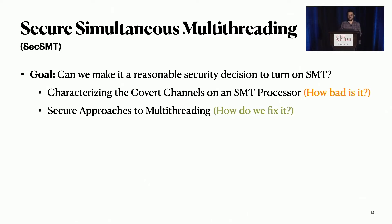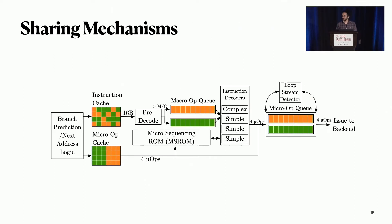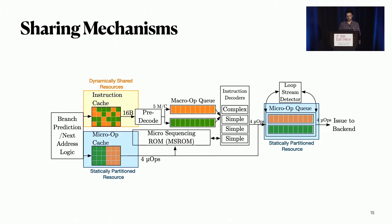The goal of this research is to design an SMT processor that is as secure as a multi-core processor against contention-based side channels, so that we can make it a reasonable security decision to turn SMT back on. Naturally, the first step is to understand to what extent modern SMT processors are vulnerable to information leakage. Pipeline resources can have different sharing mechanisms — for example, threads can dynamically share a resource like instruction cache, or each use only half of a resource if it is statically partitioned. Our goal is to find out which resources are statically partitioned, which are dynamically shared, and to what extent dynamic sharing creates a security leakage.